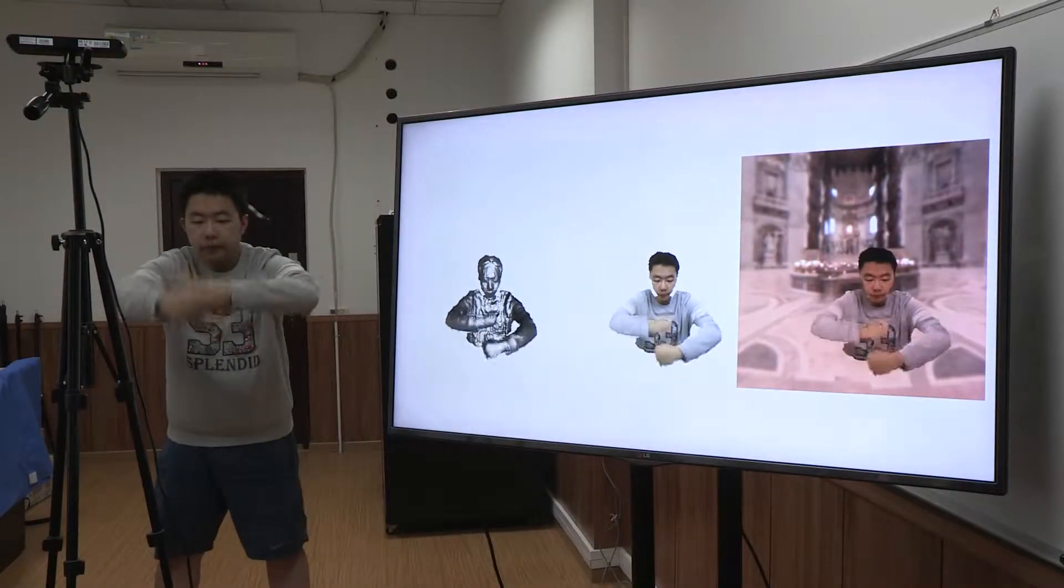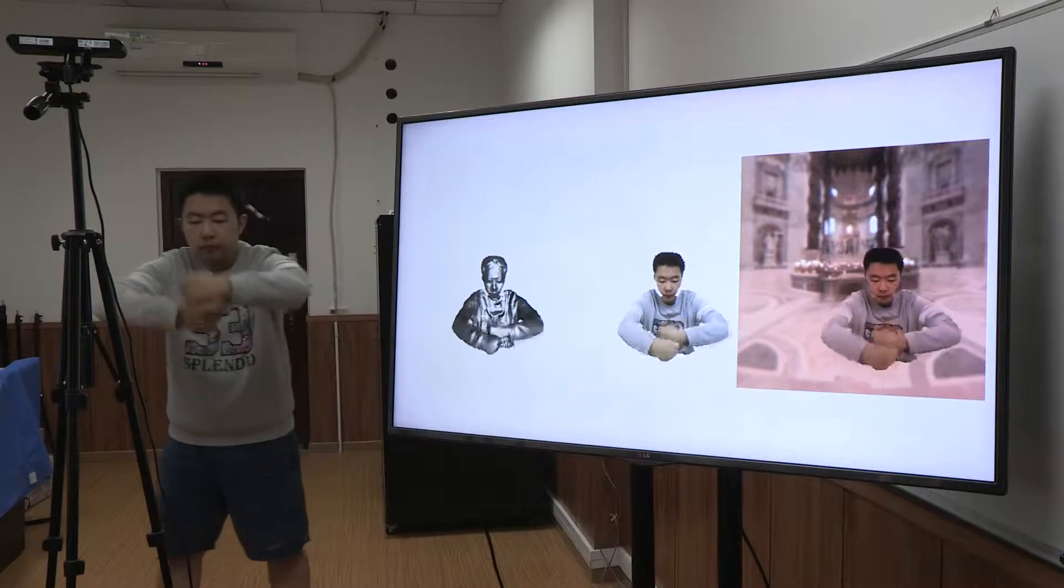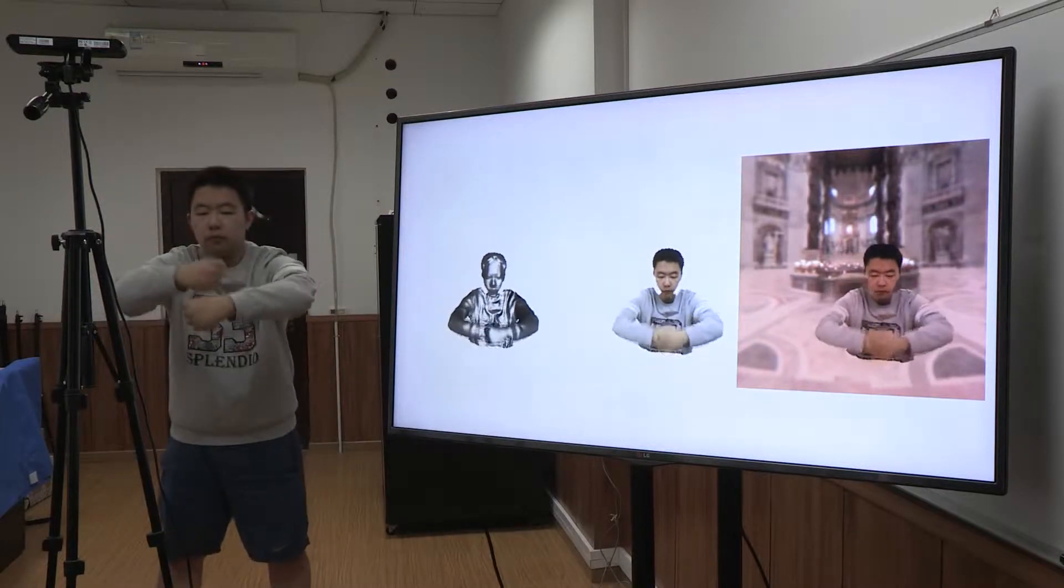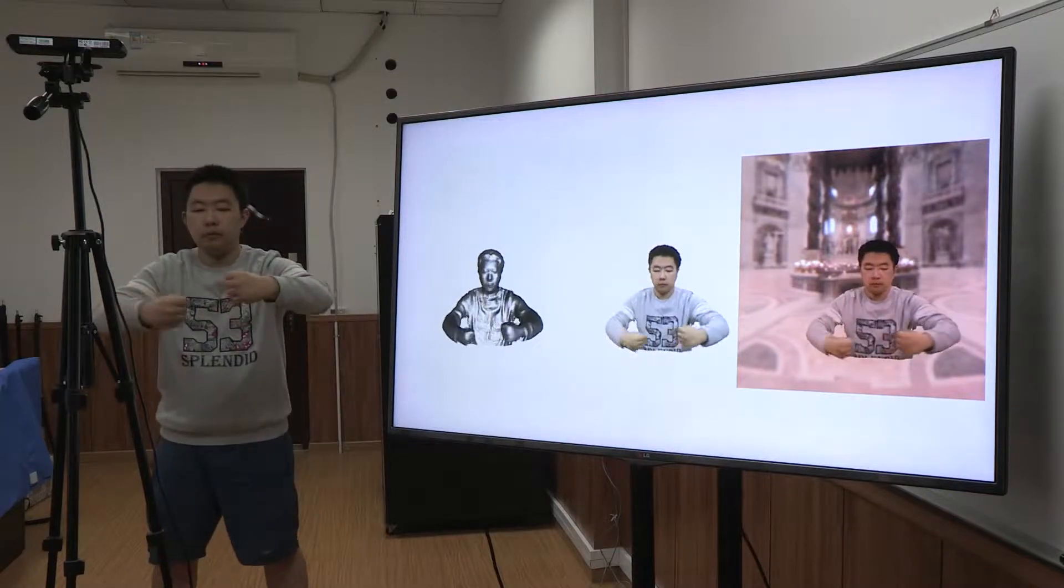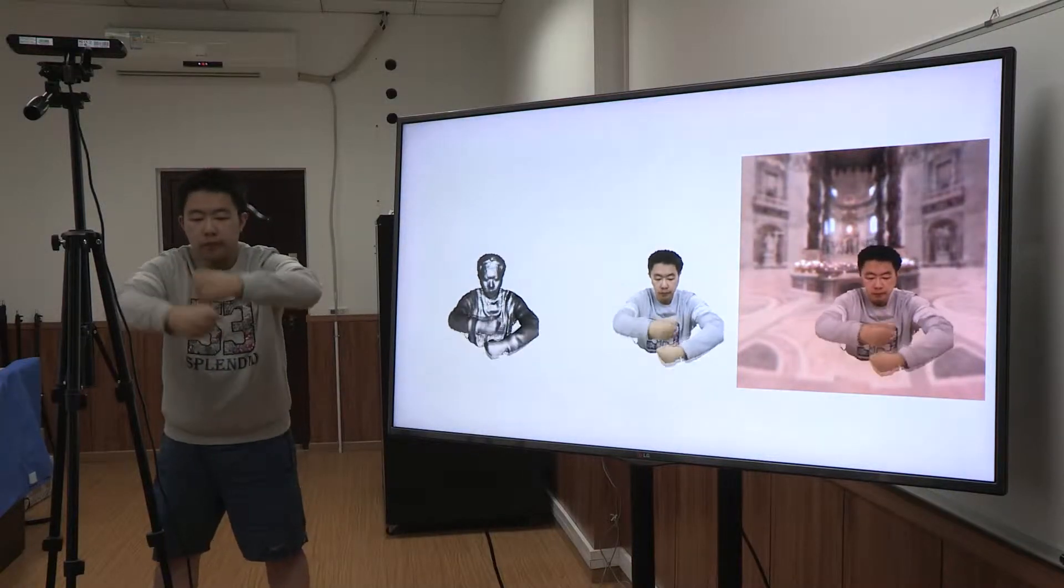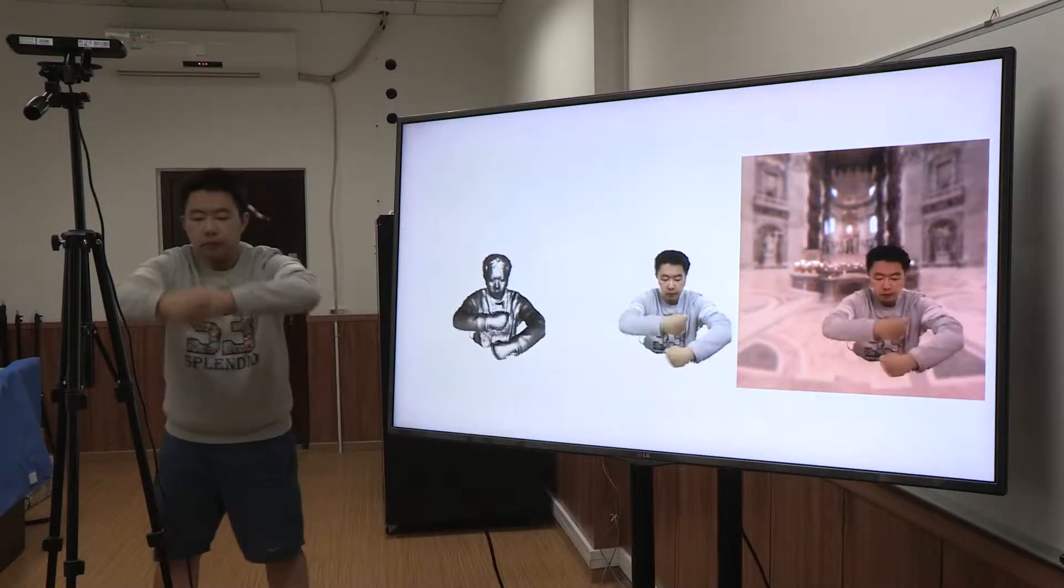Our system can also handle fast motions. In this sequence, the performer rolls his arms in front of the camera. Benefiting from our novel shading-based joint optimization, our system tracks this fast rolling motion with severe occlusions, again in real-time.